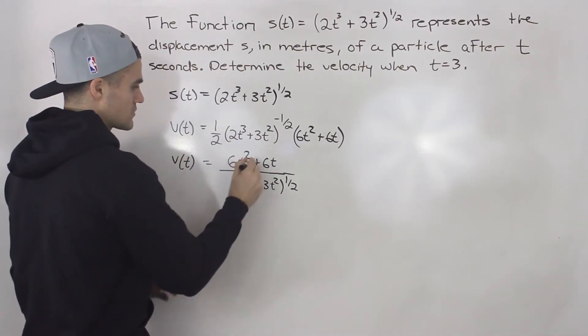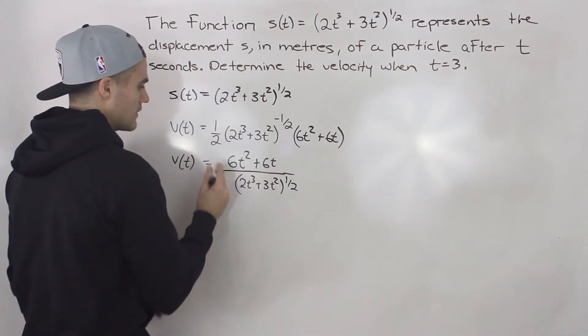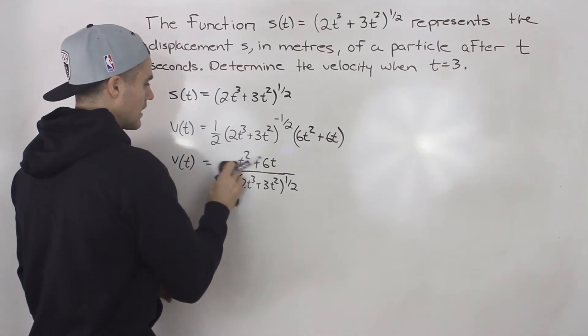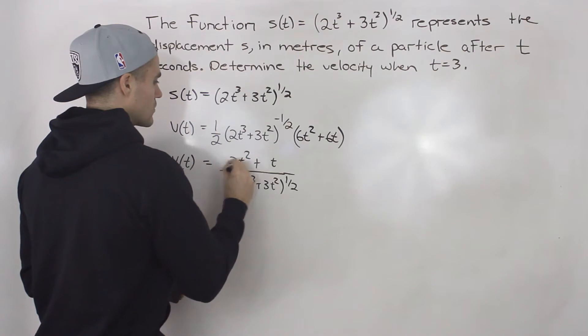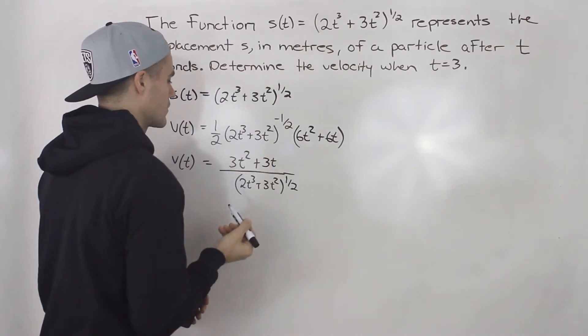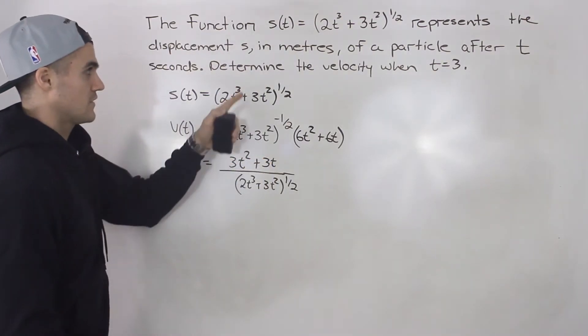And we can actually get rid of this 2 here, because we can factor out a 2 from the top, and then the 2s would cancel out. And if we factor out a 2 from the top, we would have 3 over here and 3 over here.